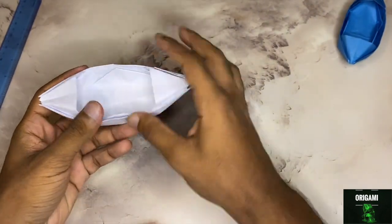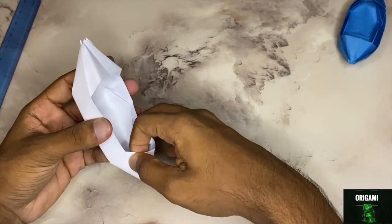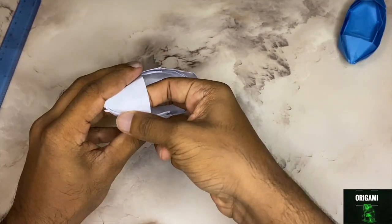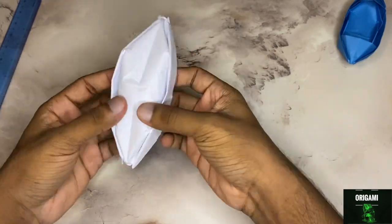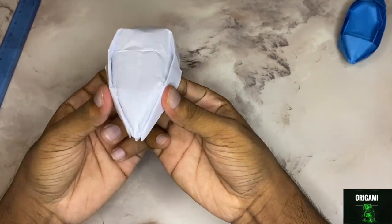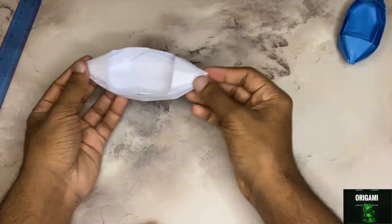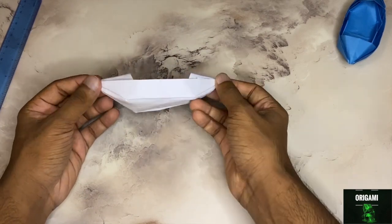Turn it over and you guys, you want to tuck on these two layers just to fix it up a bit. And then just shape it a bit however you like. And there you guys have it, the origami boat is complete.